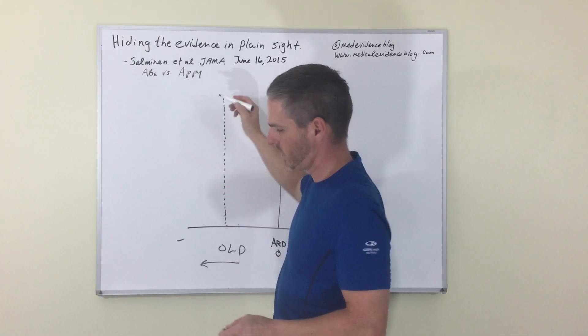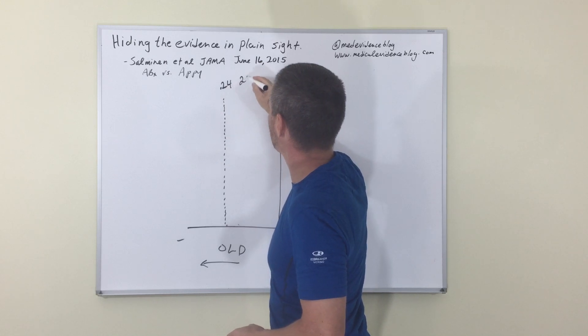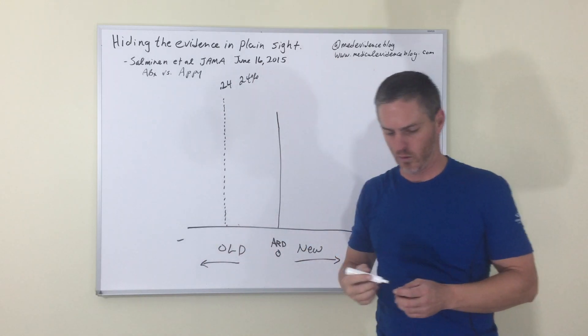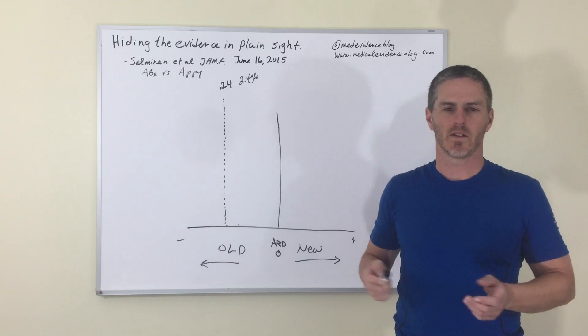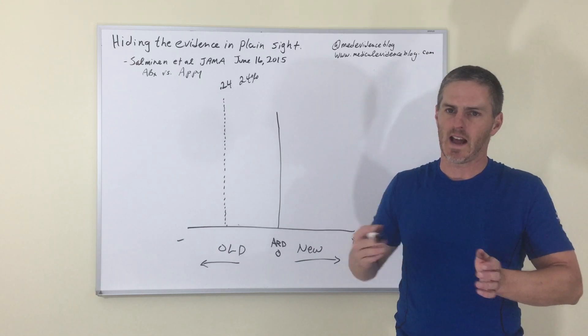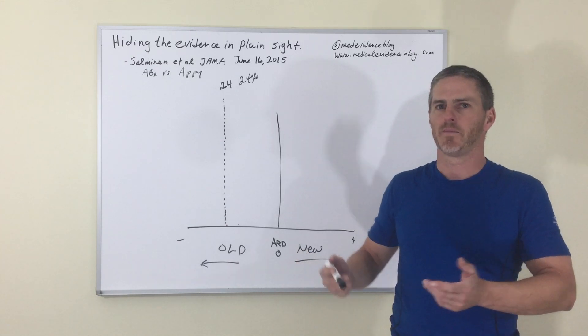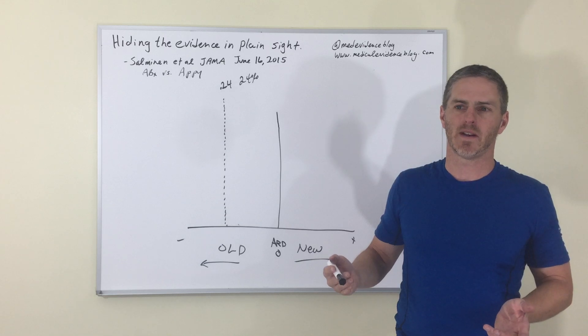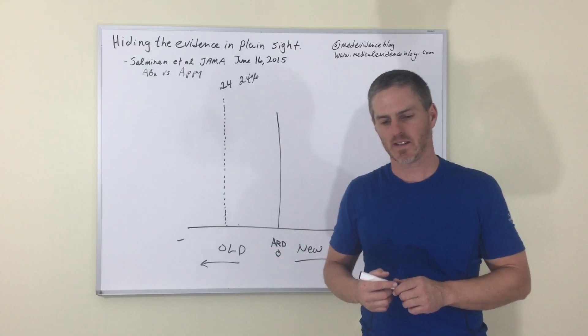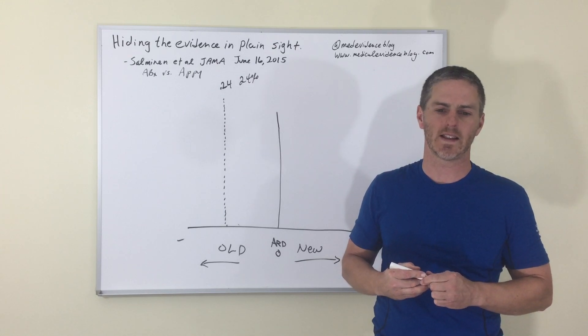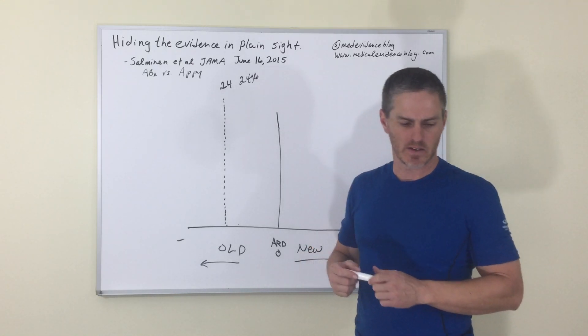These authors in this article chose a pre-specified margin of non-inferiority of 0.24, or 24%, so they're saying as long as antibiotics aren't worse than surgery, and I won't get into all of the arguments about whether or not this is an appropriate delta. It is, given the outcomes, since if you fail antibiotics, you're only just going to cross over and get an appendectomy, and maybe it's worth it to save four people from an appendectomy to have one guy fail antibiotics and have to go get an appendectomy. We could debate all of that, but suffice it to say that a pre-specified margin of non-inferiority of 24% is quite large, and I'm not quite sure why it was 24 rather than rounding up to 25.